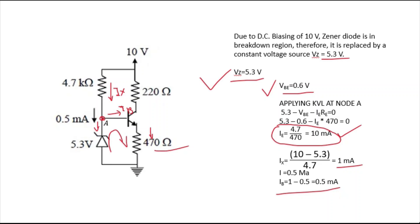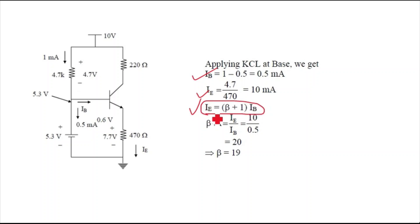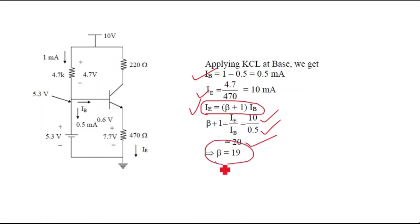Now we know IE = 10 mA and IB = 0.5 mA. Using the relationship IE = (1 + β) × IB, we get: (1 + β) = IE / IB = 10 / 0.5 = 20, therefore β = 19. This is the current gain of the transistor.